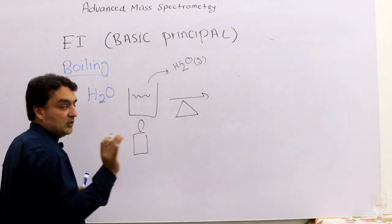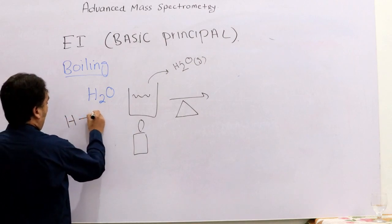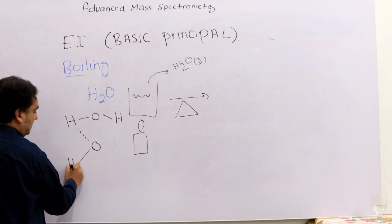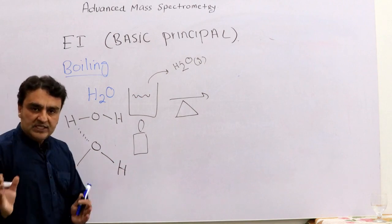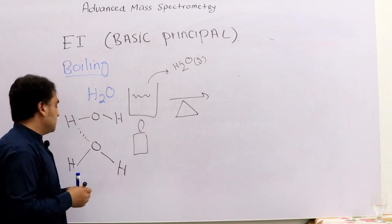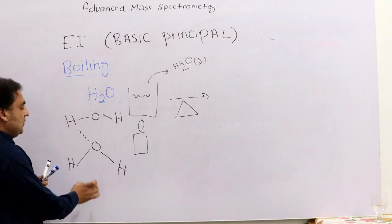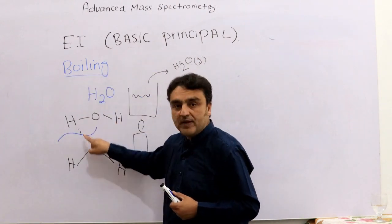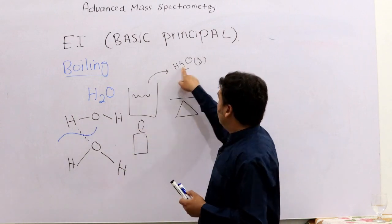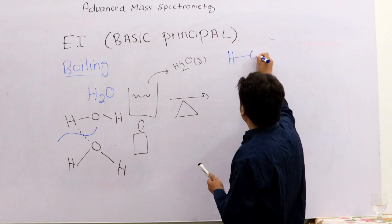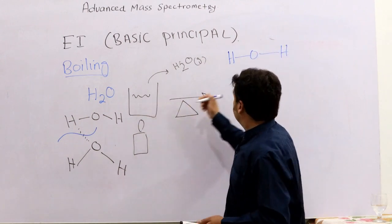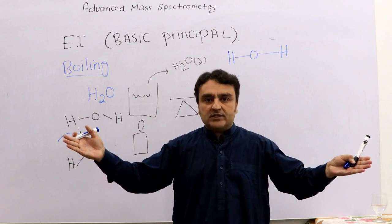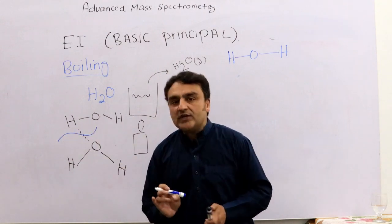When water boils, the hydrogen bonds between molecules break, but the covalent bonds within each H2O molecule remain intact. So the H2O molecule escapes from the container as a gas, still as H2O. In the gas phase, molecules are farther apart from each other and are separated.